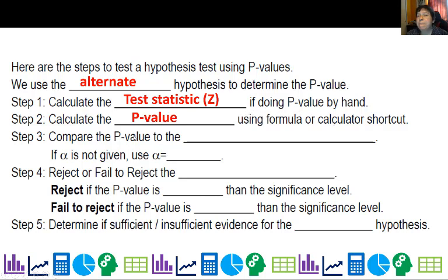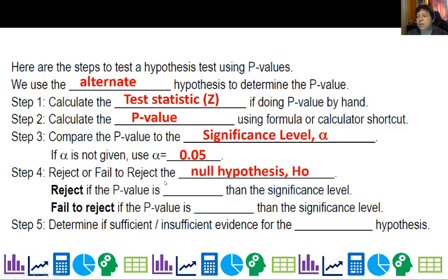Then we compare this probability to the significance level, which is alpha. If alpha is not given, use 0.05. Then we're going to reject or fail to reject the null hypothesis H0. We reject if the p-value is lower, because a very low probability means that's unusual — maybe I should change my mind.